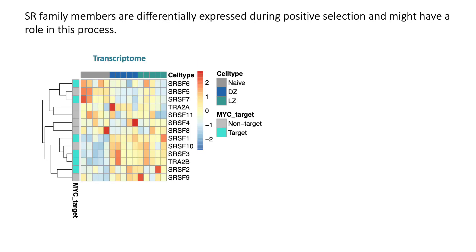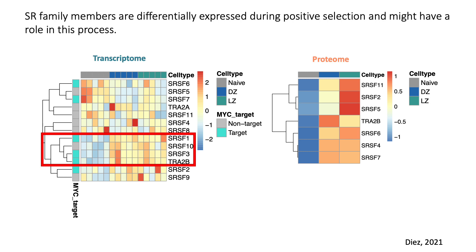Using long-read nanopore data, we checked the expression of SR family members during the germinal center reaction. We could see that some members showed higher expression during the germinal center reaction in the dark zone and light zone populations. We also found proteome data from human tonsils from the same compartments, and we observed that most SR family members showed an increase in expression during the germinal center reaction, giving us a clue about their possible role in the positive selection process.